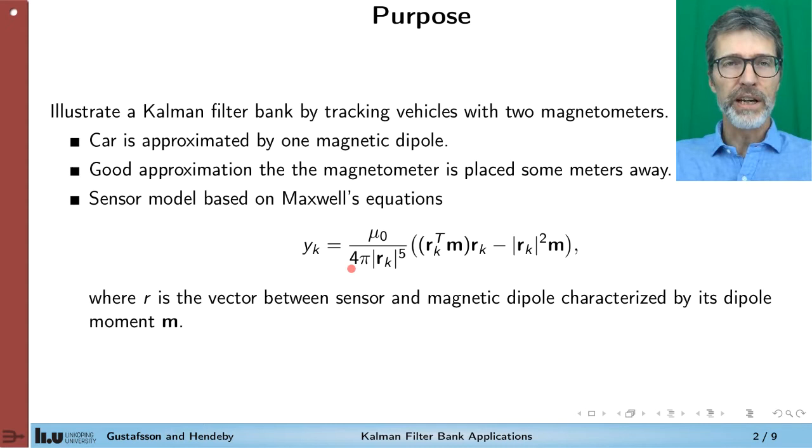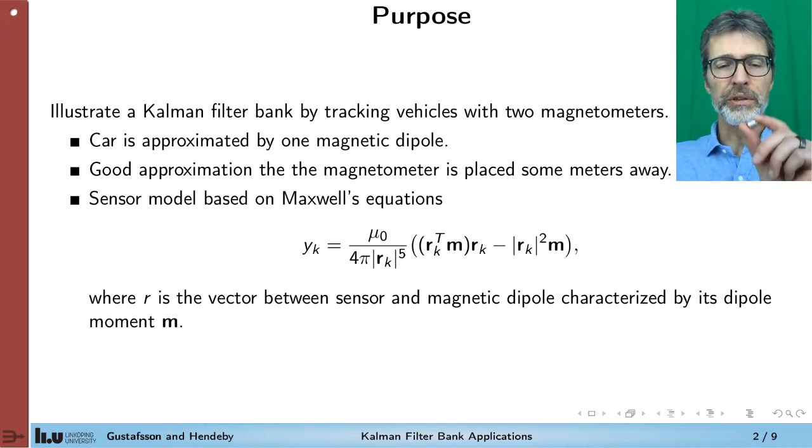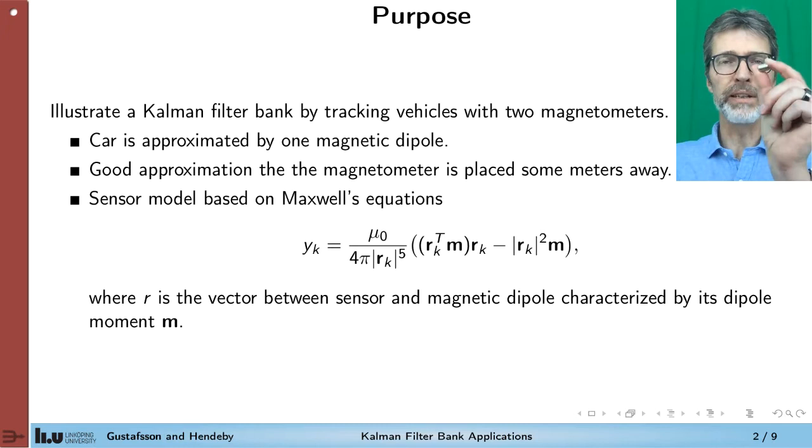So what we have here can be derived from Maxwell's equations. So R denotes the vector between the sensor and the dipole. M is the dipole moment, which is a unique characterization of each magnet. It depends on the size and also how it is magnetized.